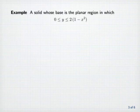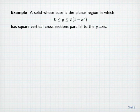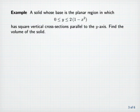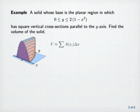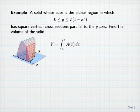Example: A solid whose base is the planar region in which y is between zero and two times one minus x squared has square vertical cross-sections parallel to the y-axis. Find the volume of the solid. This is the base of the solid; note that it extends from minus one to one along the x-axis. We can approximate the volume by summing layer volumes given by A of x_i times delta x, and as delta x approaches zero, these approximations converge to the integral of A of x. The limits of integration are x equals minus one to x equals one.